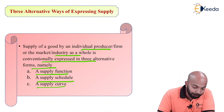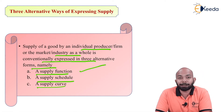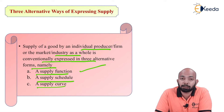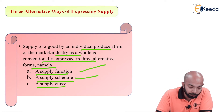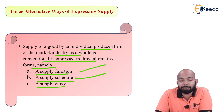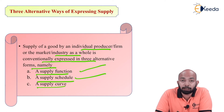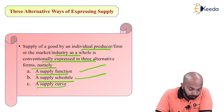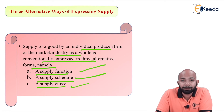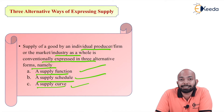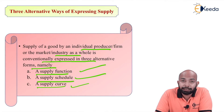First would be a supply function — a function that expresses the supply term. Second would be a supply schedule, just like the demand schedule that we have. And just like the demand curve, we have a supply curve as well. Based on all these three things, we'll be expressing supply within these three alternative ways. Let's understand each of them in detail.